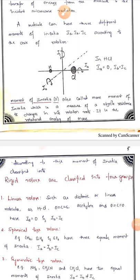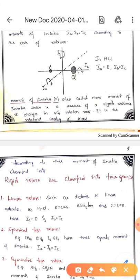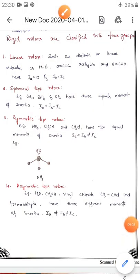Based on the moment of inertia, we can classify the rigid rotator into four types. Moment of inertia is a measure of an object's resistance to changes in its rotation — it is the rotational analogue of mass. A molecule has three moments of inertia: Ia, Ib, and Ic, where Ia is the principal axis. Rigid rotors are classified into four groups: linear, spherical, symmetric top, and asymmetric top molecules. For linear molecules such as HCl and OCS, the principal axis Ia = 0, and Ib = Ic.